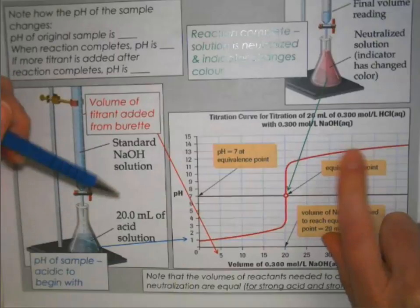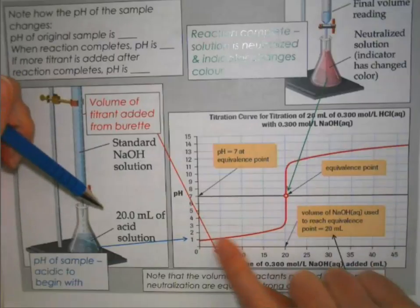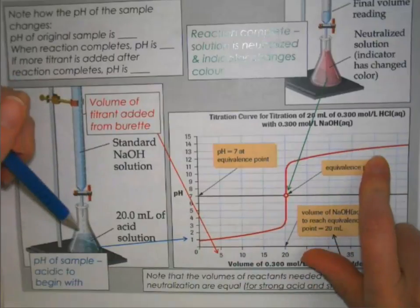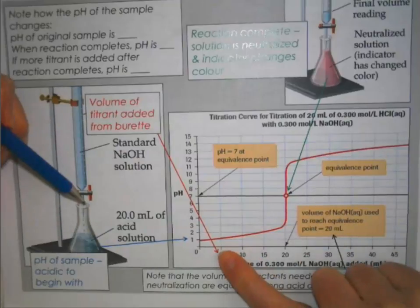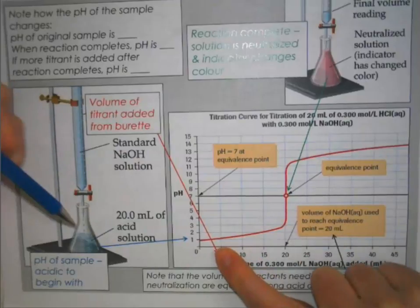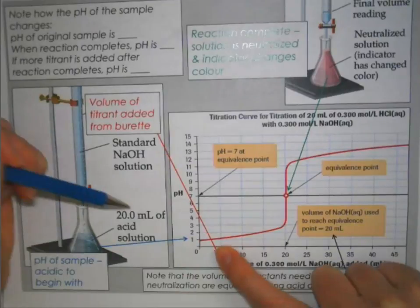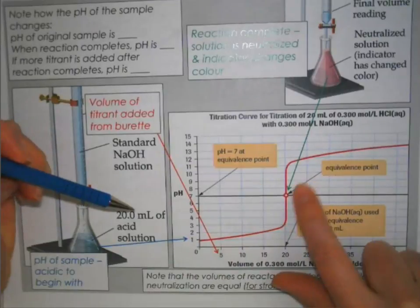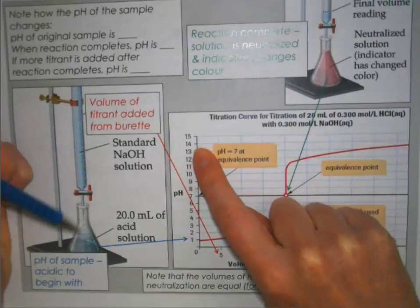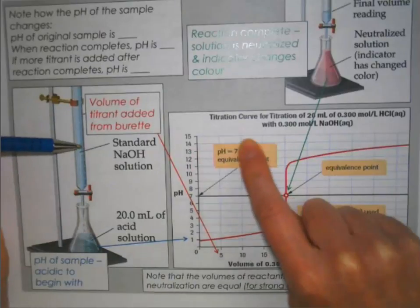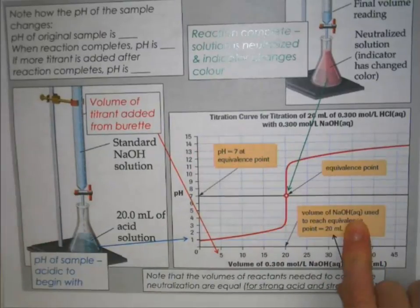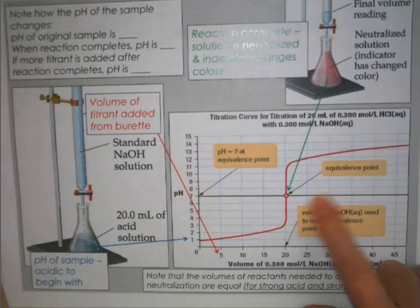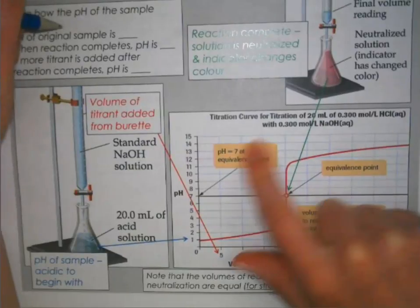That's why we see this general S-shape. It's really important to be aware that this shape is specific to a strong acid sample being titrated with a strong base. If you started with a base instead of an acid, you'd see the reverse of this shape — you'd start at a high pH, and if you were adding acid, you'd see the reverse happening.